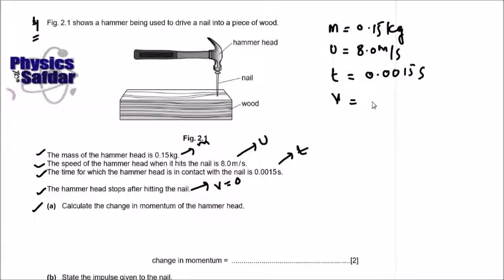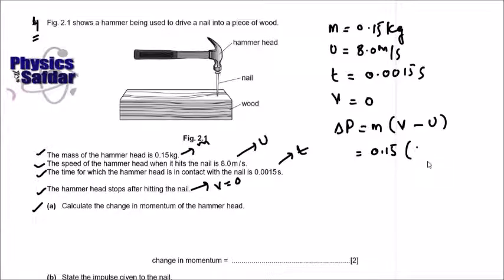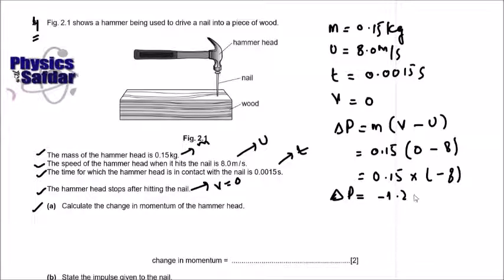The change in momentum equals mass times (final velocity minus initial velocity). Mass is 0.15 kg, final velocity is 0, and initial velocity is 8. So: 0.15 times (0 minus 8) equals 0.15 times negative 8, giving a change in momentum of negative 1.2 Newton-seconds. The magnitude of the change in momentum is 1.2 Newton-seconds.